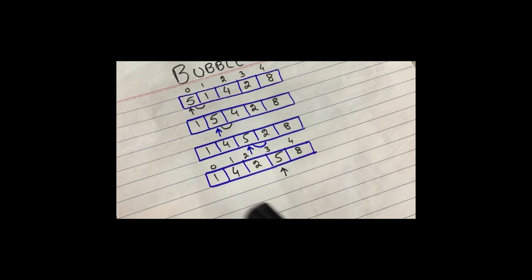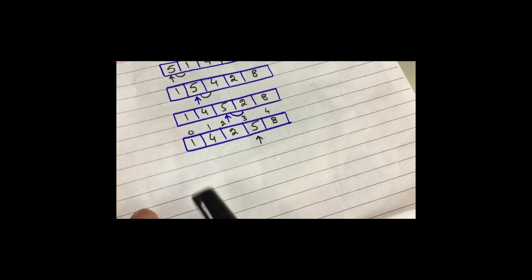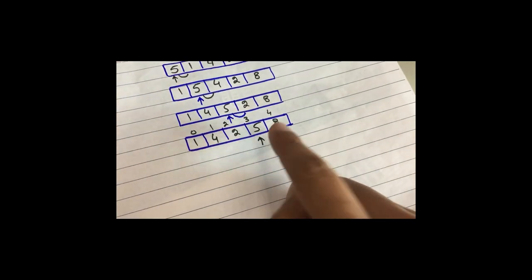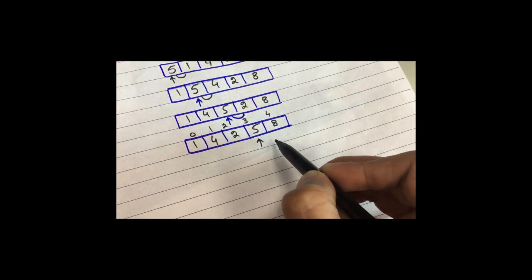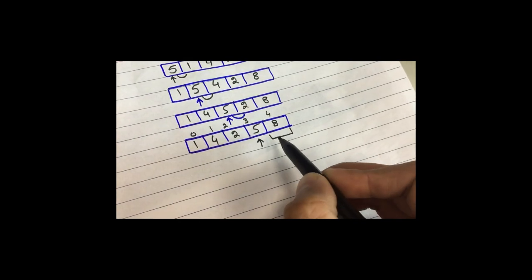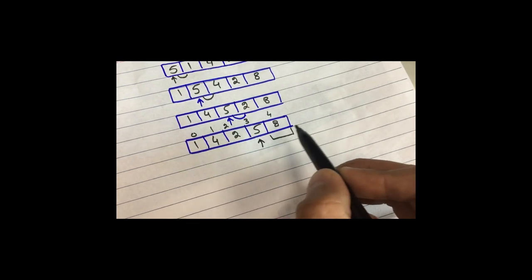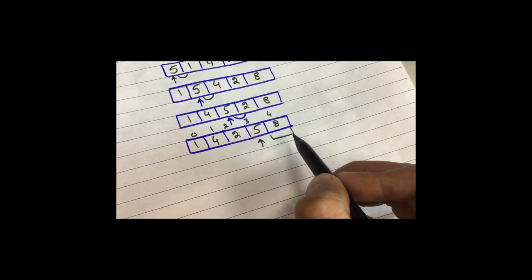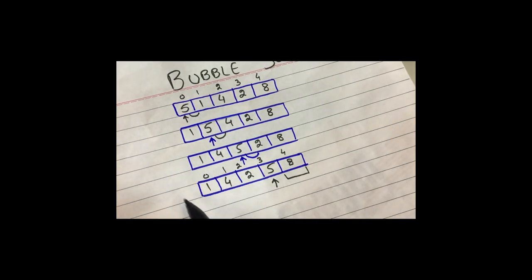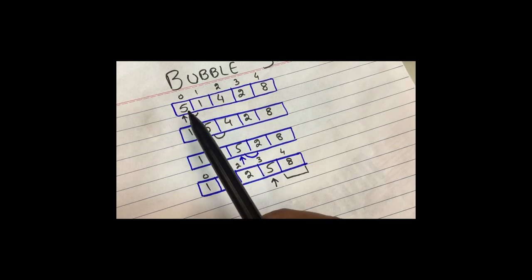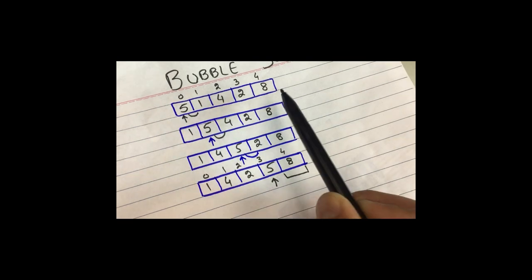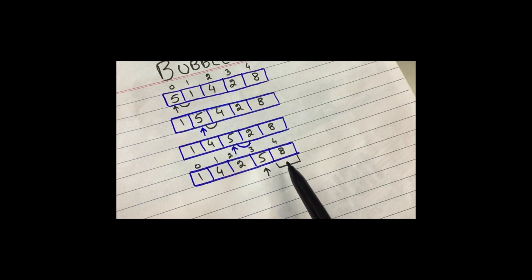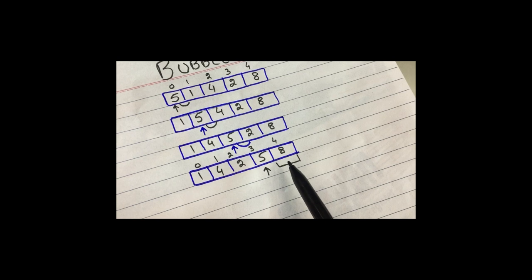At the end of the first iteration, the largest element of the array is placed at the rightmost position. The array is sorted from the right end. We can verify: checking 1, 4, 2, 5, 8 — 8 is the maximum and is placed at the rightmost. This means the first iteration is done. When we compare consecutive values from the first to the last, the last element is sorted and placed in its correct position.